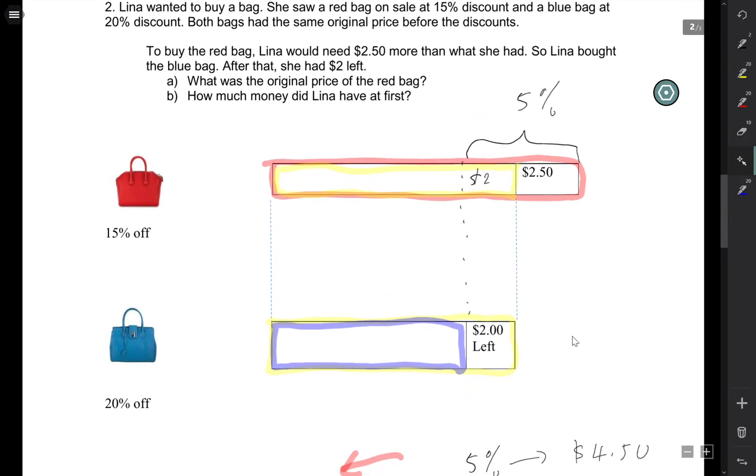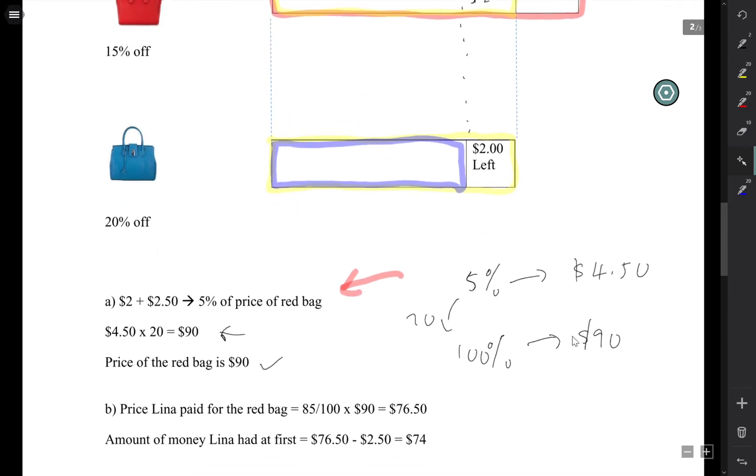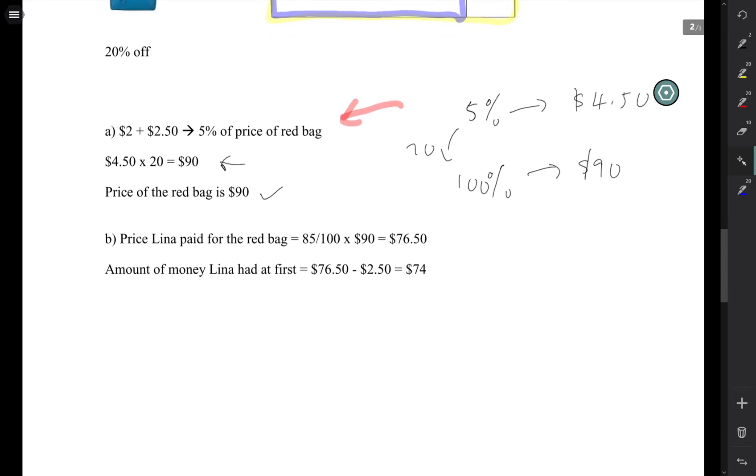Next, how much money did Lina have at first? If the price of the bag was $90, and the red bag actually had a 15% discount, the percentage that she actually paid for the bag is 85%. Because if you take 100 minus 15 in percentage, you get 85%. We want to find how much did she pay for the bag. 85% times 90, you get $76.50. Now, remember Lina paid $2.50 more for the bag. She had to borrow from somebody, $2.50. So you got to take the price, minus $2.50 to find how much she has at first. So she had $74 at first.